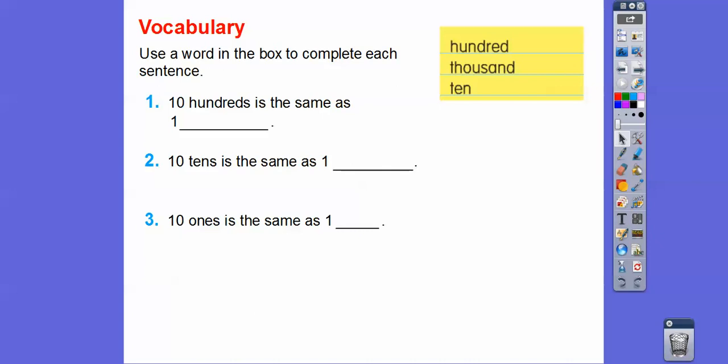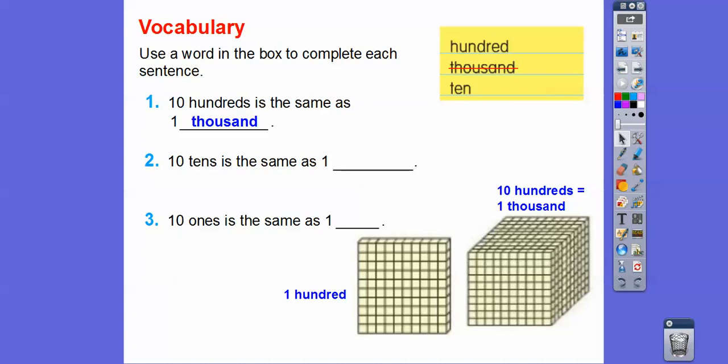Use a word in the box to complete each sentence. We have hundred, thousand, ten. Number one: ten hundreds is the same as... Well, here's one hundred right here. If we have ten of them, then it gives us this thousand block. So ten of these gives us this thousands block, so it's the same as one thousand.